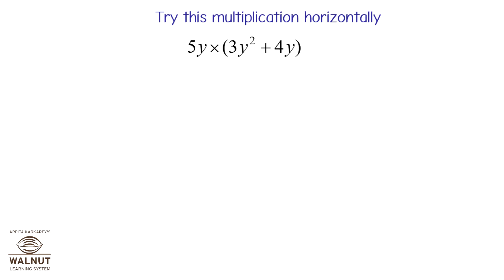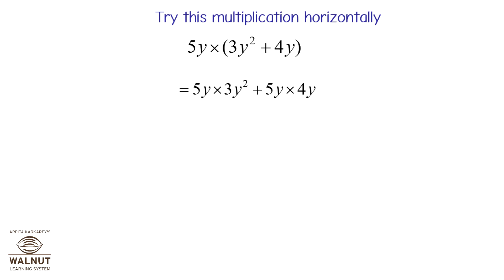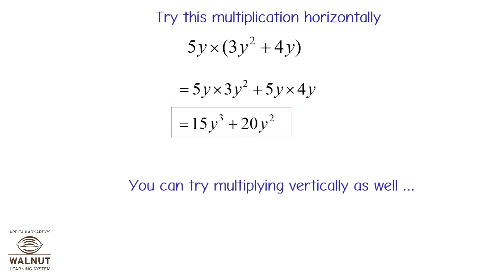5y multiplied by (3y squared plus 4y) is equal to 5y into 3y squared plus 5y into 4y, which is equal to 15y cubed plus 20y squared. You can try multiplying vertically as well.